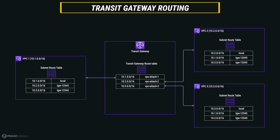In the Transit Gateway route table, each route points to an attachment — it can be a VPC, VPN, or a peering attachment. When traffic arrives at the Transit Gateway, the destination address is matched with one of these route entries and forwarded to the respective attachment. If none of the route entries are matched, the traffic is dropped at the Transit Gateway. This is a simple routing example, but you can imagine the possibilities of advanced routing setups between your VPCs and on-prem networks using centralized Transit Gateway route tables.